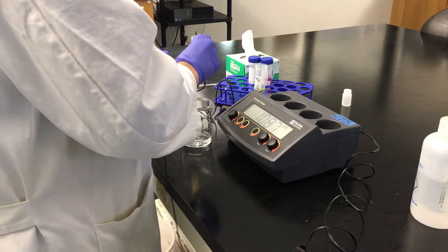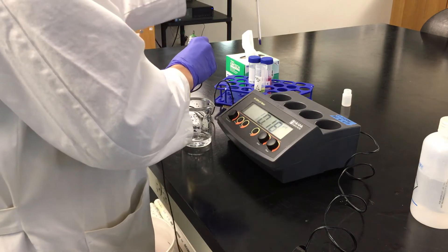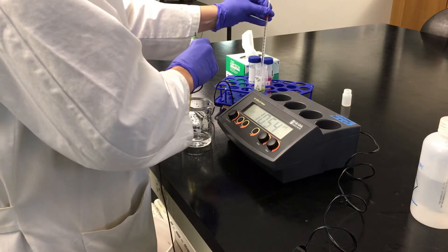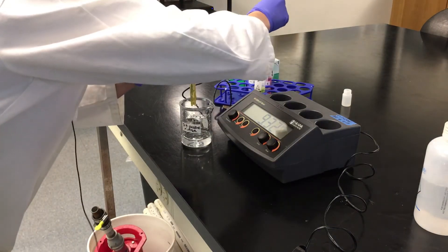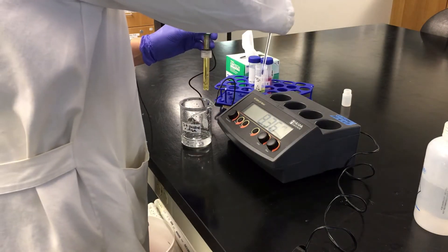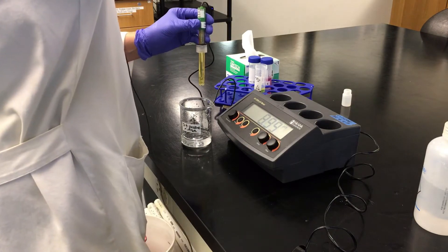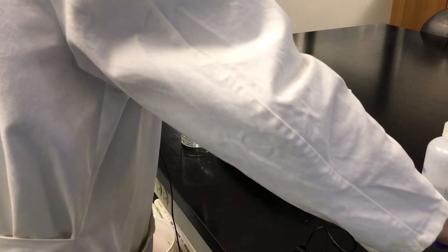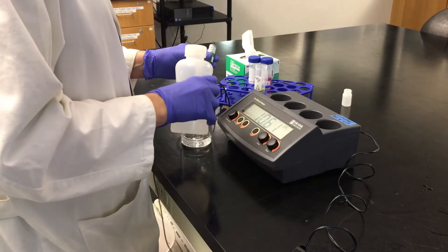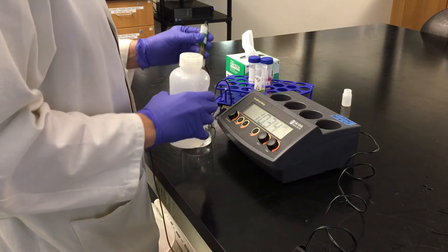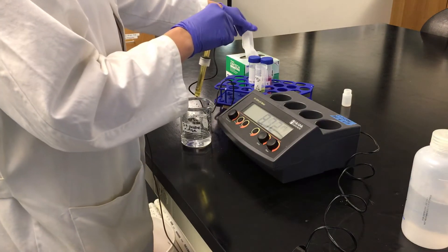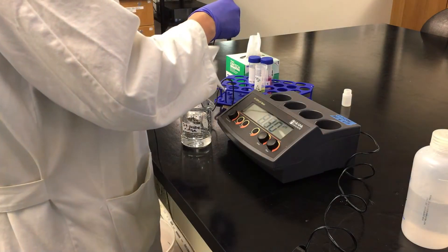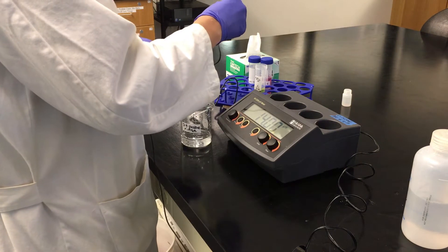So we want to make sure we account for temperature, so we're going to measure the temperature of our pH 7. See that our temperature reading is 20 C. We want to place our probe into the pH 7 standard. I'm going to remove some of that water, and just dab it.